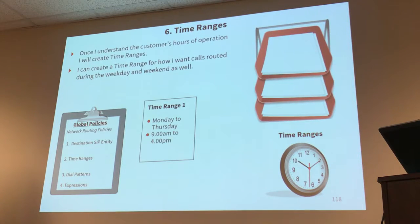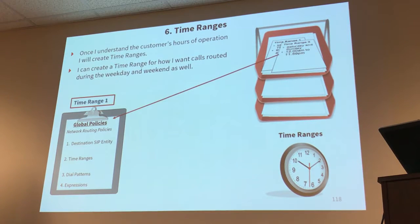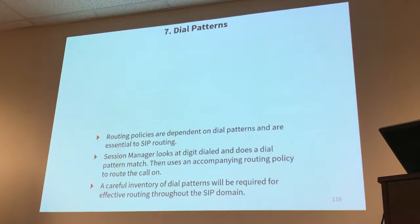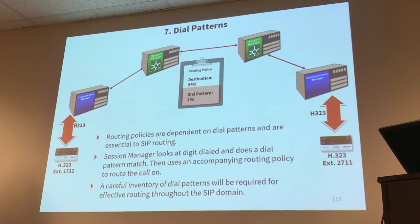Time ranges allow you to specify a time range where you want the routing policy to be active. So you could say this time range - which could be working hours - I'm going to route to a specific place, and then over the weekend I'm going to route to a different place. Dial patterns are pretty much a pattern that's going to match with the dial number. If it matches, a routing policy is going to be associated to it. Session Manager looks at the dial number for a dial pattern match, and if it finds a match, it uses the routing policy associated with that dial pattern.